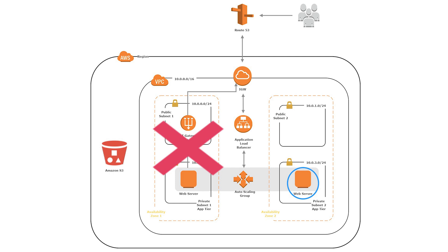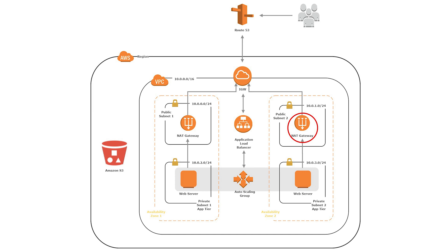To solve this problem, we need to create another NAT gateway in the second availability zone. Then instances in the private subnet within that availability zone will route traffic through that NAT gateway to the internet, and having an architecture like this helps us create high availability.